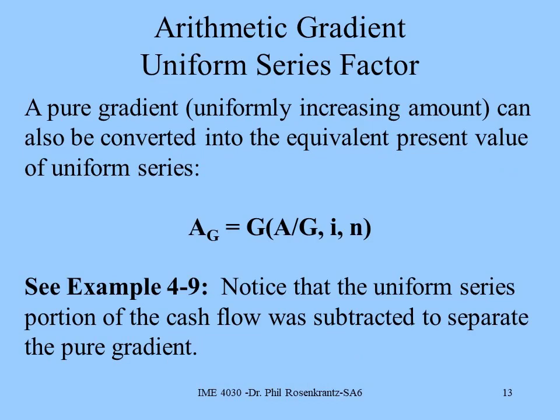Let's go to slide number 13 and look at our other arithmetic gradient. This time, we're converting from an arithmetic gradient to a uniform series. We're going to look at example 4-9 in your book. Here we have a uniform series and a gradient mixed together again, but instead of finding the present value, we're going to find a uniform series that's equivalent to that gradient. We can decompose the cash flow series into a uniform series and a pure gradient. But here we're going to use the A over G factor, not the P over G factor, to get the uniform series that's equivalent to our gradient. You can see how that problem is solved.